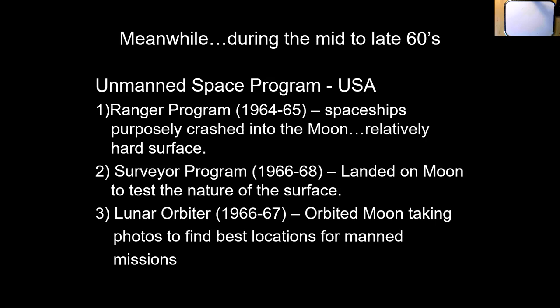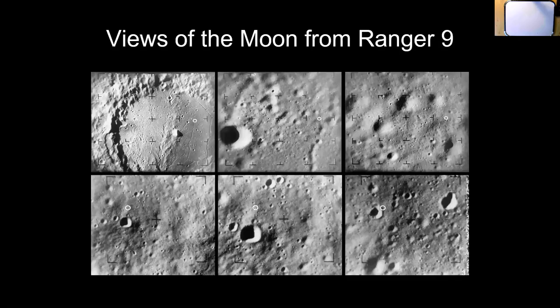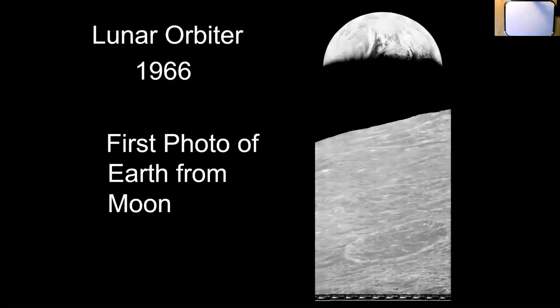This was called the unmanned space program. Here's footage from Ranger 9 before it crashed into the moon. Here's a Lunar Orbiter - first in 1966, the first photo of Earth from the moon. It's beautiful - there's the moon surface in the foreground, and there's a nice crescent Earth. So if it's a crescent Earth, what would the moon look like from Earth at that moment?